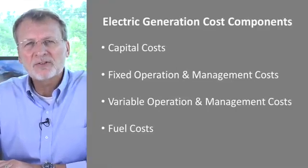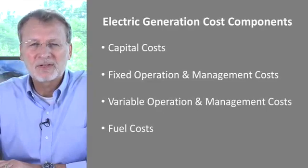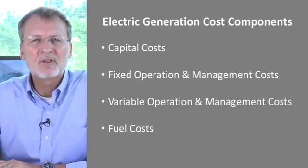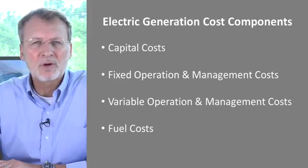While system operators generally schedule the generation of electricity to meet forecasted demand based on power plant operational costs, these costs are just one of several that go into paying for a power plant. The main cost components for a power plant are its capital costs, fixed operation costs, variable operation costs, and fuel costs.